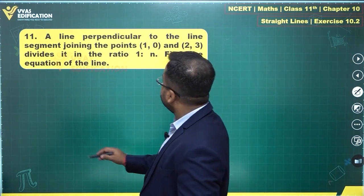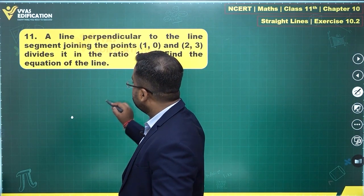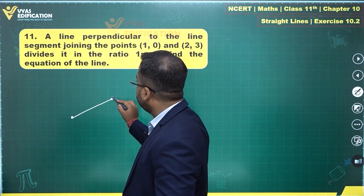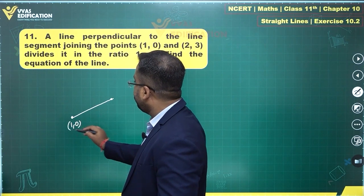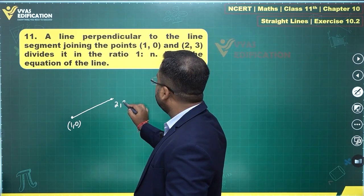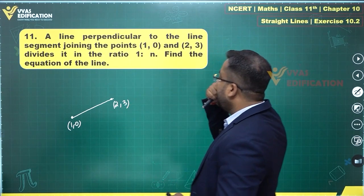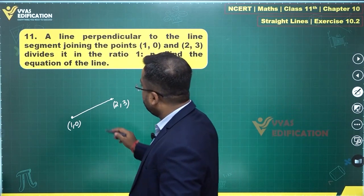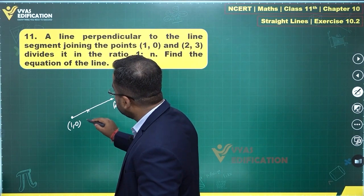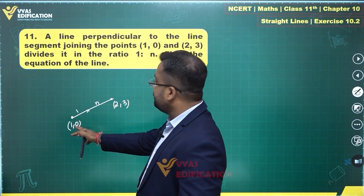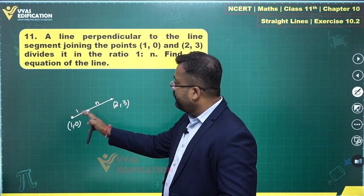Line perpendicular to the line segment joining (1,0) and (2,3). There's a line segment joining two points. It divides in the ratio 1 is to n. Since this point is given before this point, therefore 1 is to n would be somewhere here - 1 is to n.